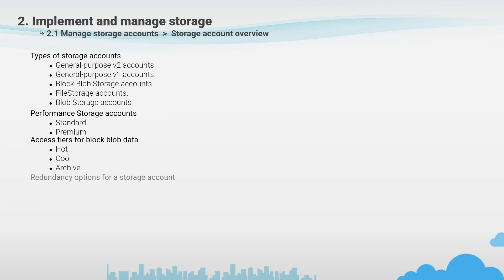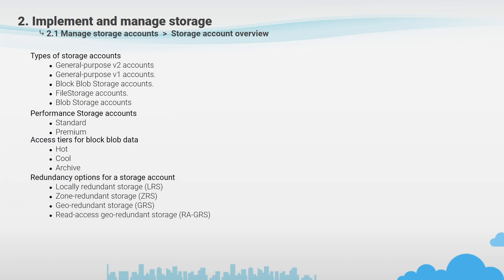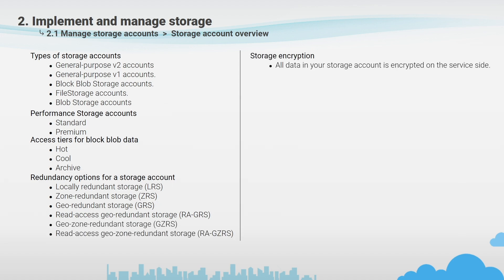Azure Storage offers 6 types of redundancy that can provide high availability for your data — we have a separate slide for this and will pay more attention to all redundant options. Encryption of data in your storage account is encrypted on the service side and you cannot disable it. Because your data is secured by default, you don't need to modify your code. If you want custom encryption, you can use Azure Key Vault to keep your encryption keys in your environment.